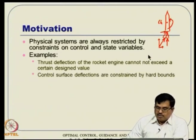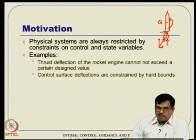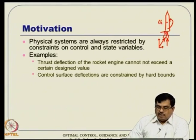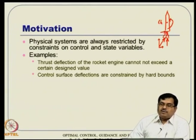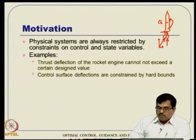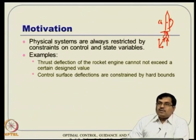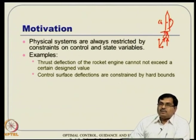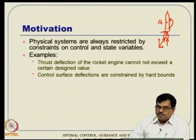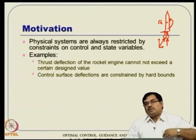Another example: consider aircraft, not necessarily rockets. Aircrafts have various control surface deflections — like elevator, ailerons, and rudders — and we have discussed those in flight dynamics lectures. Even there, control surface deflections are typically limited to something like 30 to 40 degrees. To make the idea clearer, we are talking about control magnitude constraints here, but in general the control is also constrained in its rate.